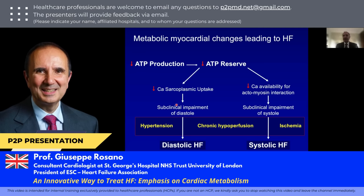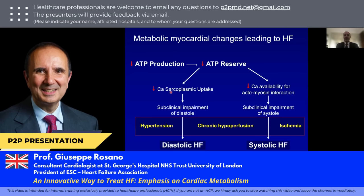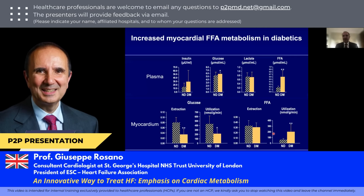At rest, the heart may compensate with lesser energy production. But when we have, for example, an increase in blood pressure, chronic hypoperfusion, or ischemia acting on a normal heart with normal left ventricular function, the impaired calcium sarcoplasmic uptake induces an increase in diastolic stiffness and therefore heart failure with preserved ejection fraction. Whilst when they act on a myocardium that has already lost part of its contractile force, conditions like chronic hypoperfusion, ischemia, increasing heart rate and blood pressure further worsen systolic heart failure.